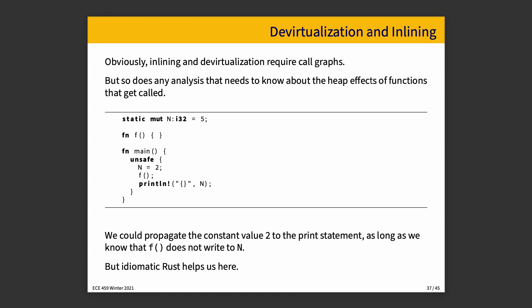The other things that prevent perhaps devirtualization and inlining is if the compiler is not able to work out the heap effects of functions. Again, we know here that we could propagate the constant value of 2 in this code to the print statement, as long as we know that function f does not write to n. But Rust helps us there. Obviously, if n is not mutable, then it makes it easier to be certain that that's the case. And otherwise, you know, if ownership was not transferred, then you can know that, oh, it wasn't used. It wasn't altered by something. And anything that helps the compiler make those determinations helps it to propagate this constant value and, therefore, save some time.